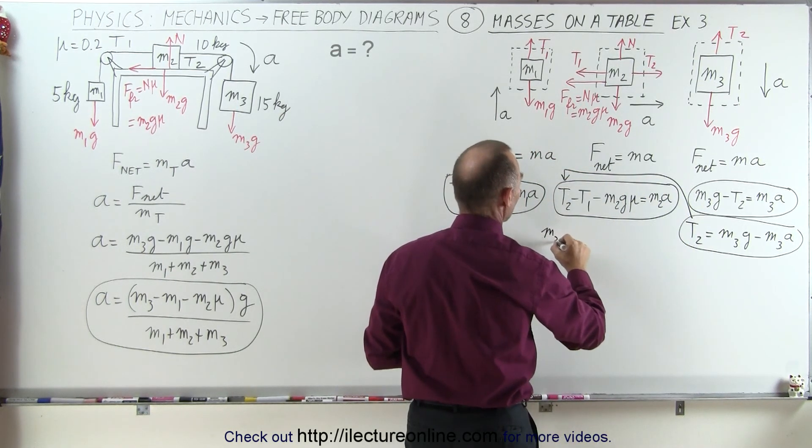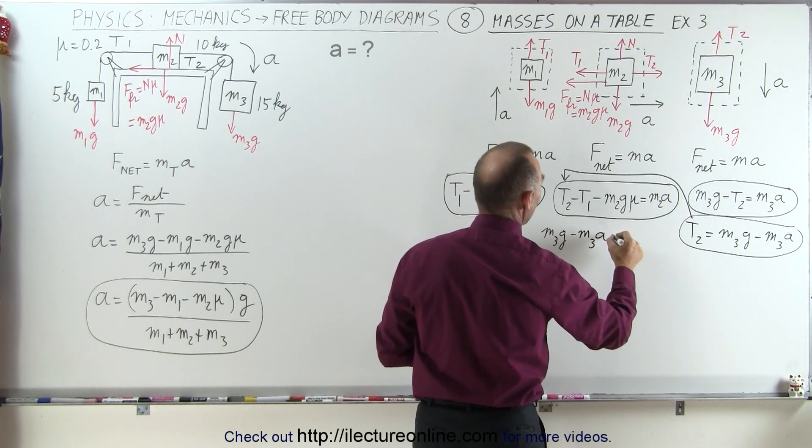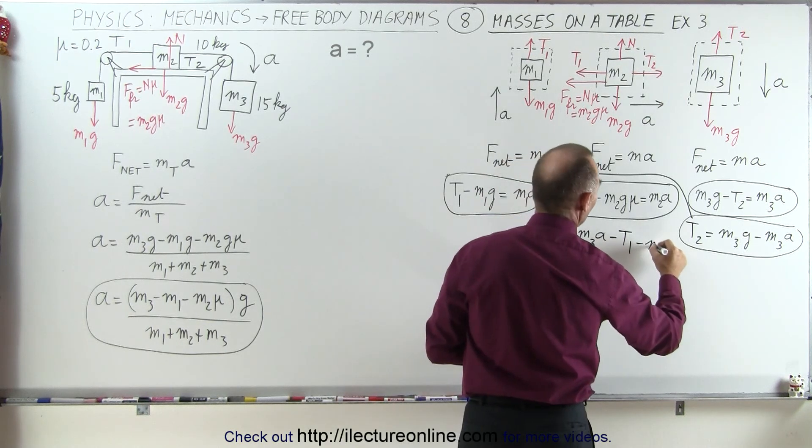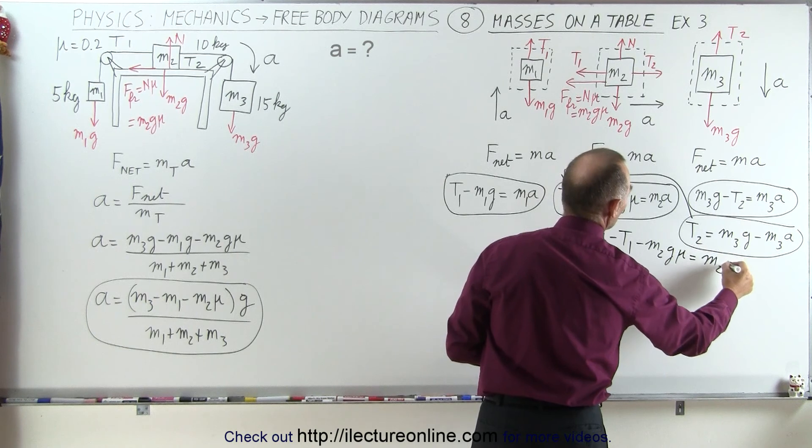So T2 will be plugged in right there. So here, when we do, we get the following: we get M3g minus M3a, minus T1, minus M2g mu, equals M2a.